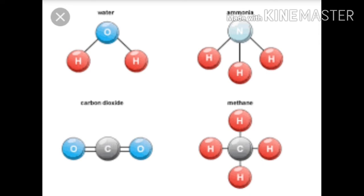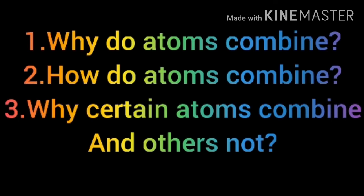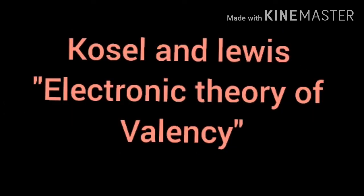In this chapter, we are also going to see the types of bonds in forthcoming classes. The chemical bond is a force between atoms, and there exists a force of attraction to hold atoms together. The answer for why certain atoms combine and why certain atoms do not combine is given by scientists Kossel and Lewis through their theory called the Electronic Theory of Valency.